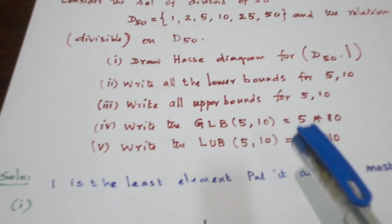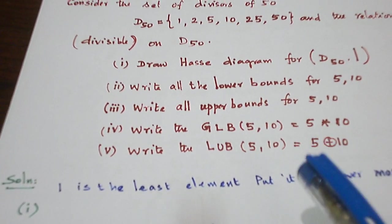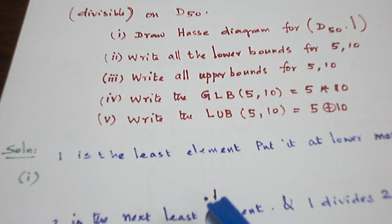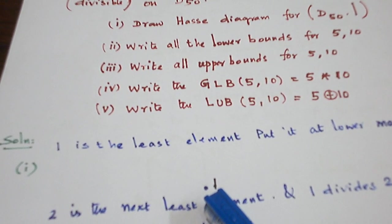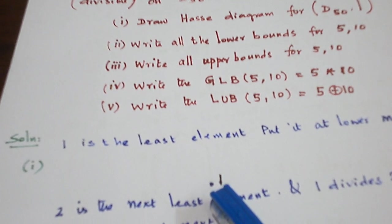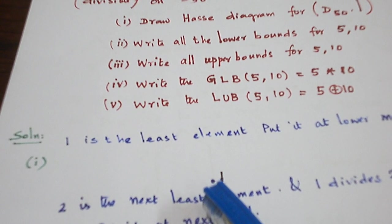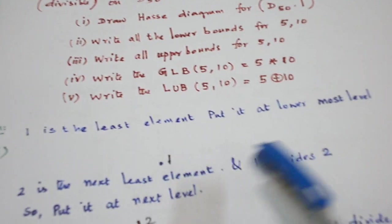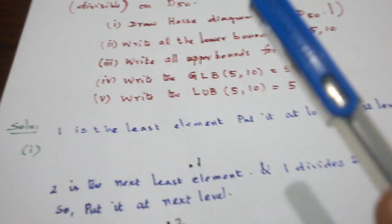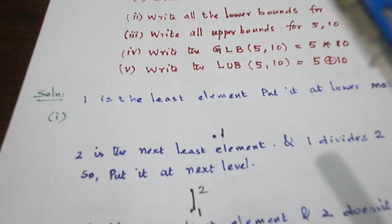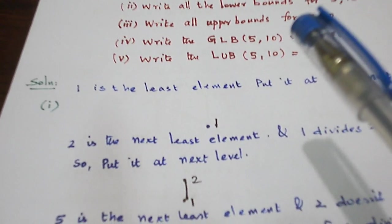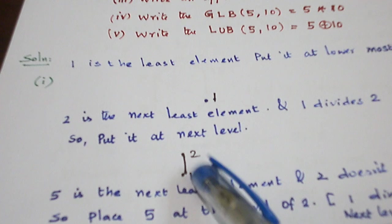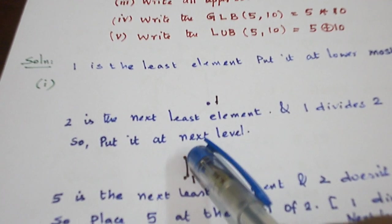How do we draw the Hasse diagram? Let us explain it step by step. The least element is 1, so let us put a point for the element 1. The next least element is 2. Since 1 divides 2, place the element 2 at the next level above 1. And 1 divides 2 is represented by a line.